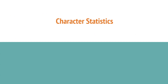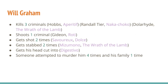Starting with some things about the characters: Will Graham kills three criminals — Gary Jacob Hobbs, Randall Teer, and Francis Dollarhyde. He shoots one criminal, Abel Gideon. He gets shot twice, stabbed twice, and gets his head cut in two with a saw thing in Digestivo.